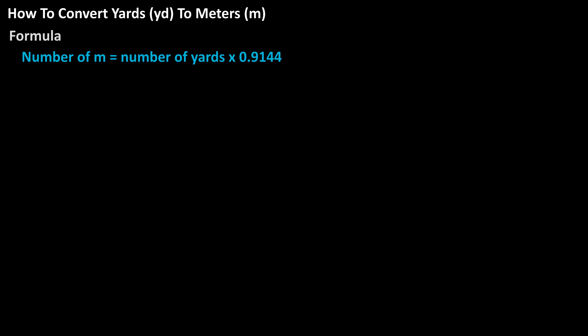The formula to convert yards to meters is: the number of meters equals the number of yards times 0.9144, as there are 0.9144 meters to one yard.